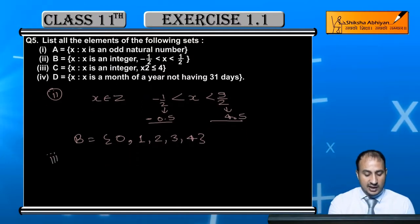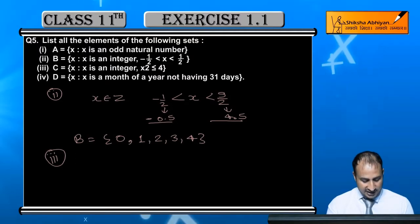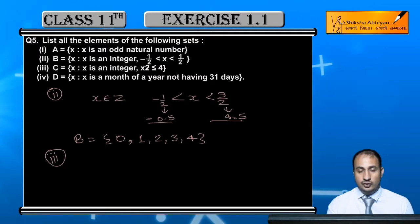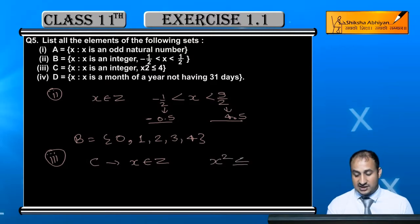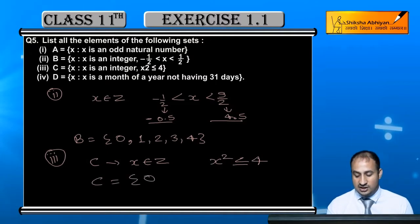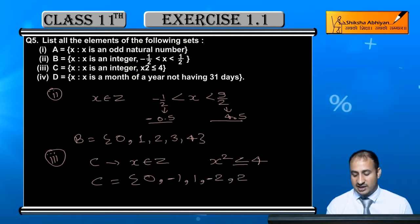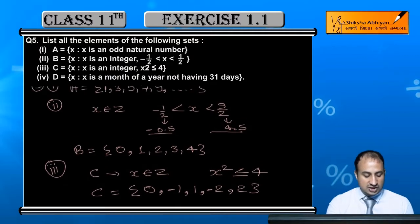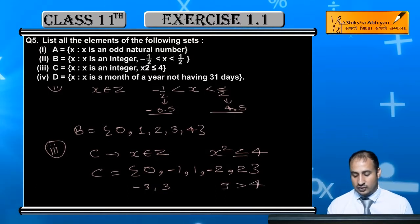The third part is about set C. The condition is that x is an integer and the square of x is less than or equal to 4. So we place plus 2 and stop there — because after that, minus 3 and 3 would give a square of 9, which is greater than 4, so we do not include those. Set C contains the integers whose square is less than or equal to 4.